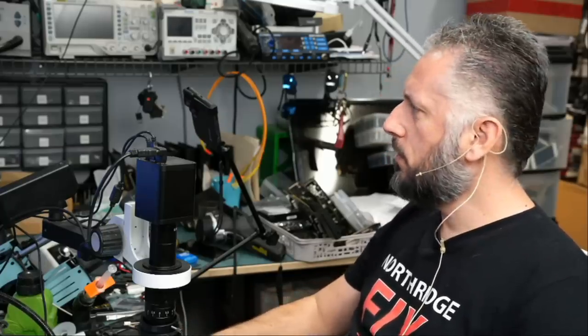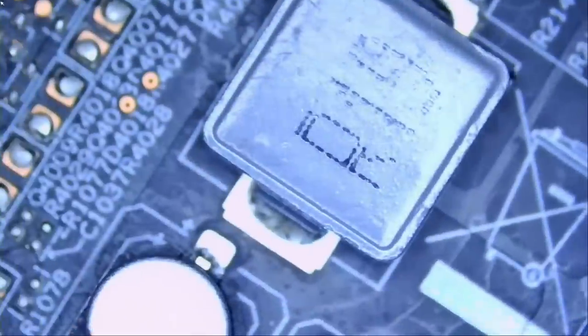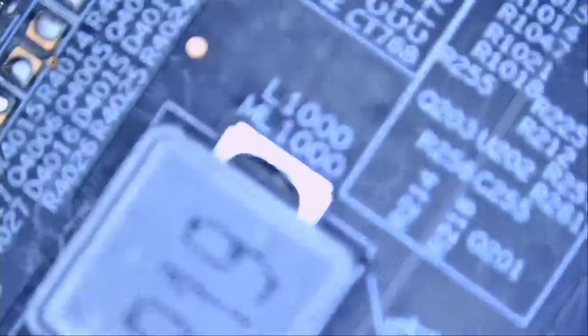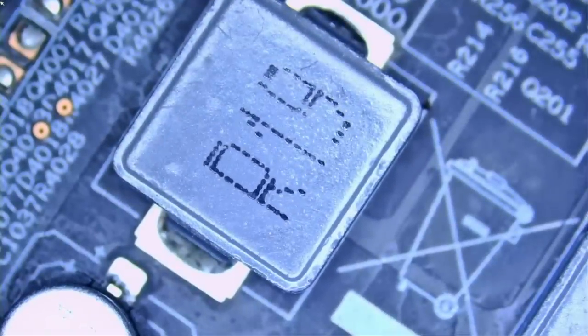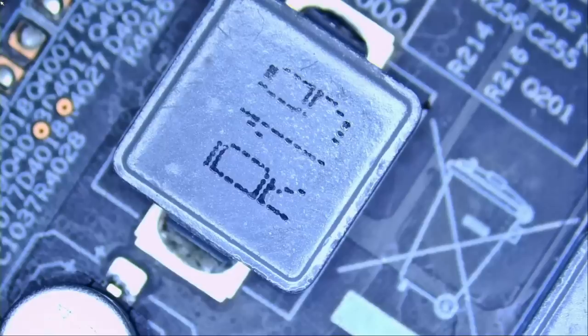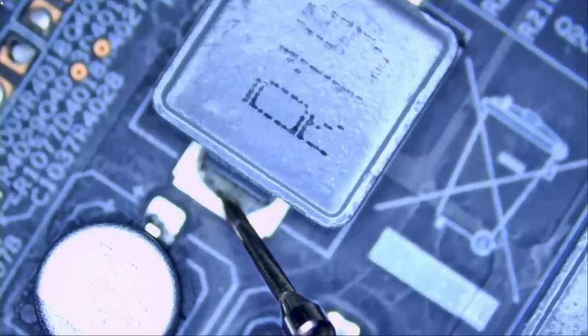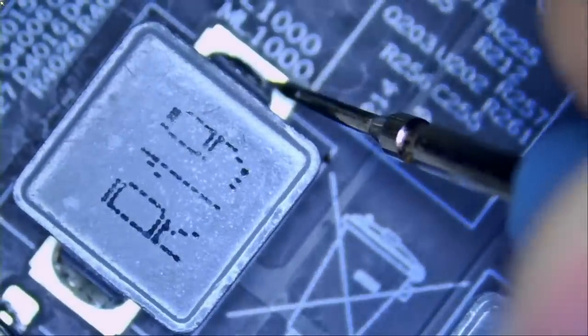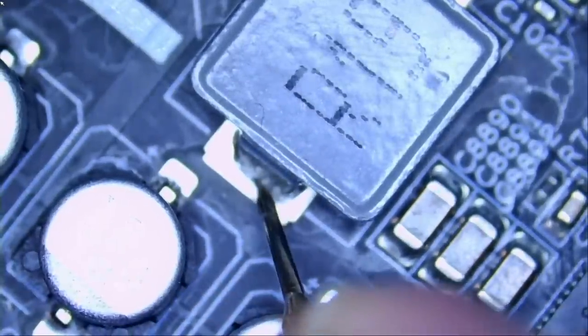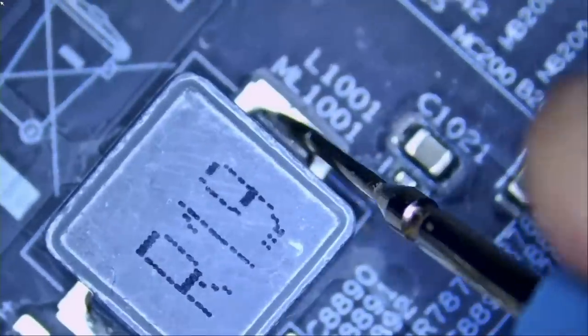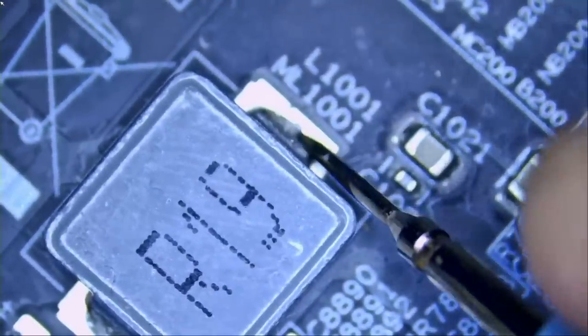Let's inspect the 12 volt lines, the inputs. We have two coils here. We can inspect at either one. We do not have a short. Let's check this one here. Oh, whoa, we have a short. Nice.